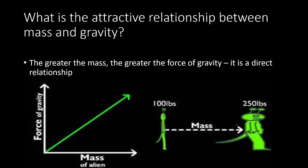Let's take a look at the attractive relationship between mass and gravity on a graph. The greater the mass, the greater the force of gravity — it is a direct relationship. Notice on this graph: as the mass increases, so does the gravitational force. As mass increases, gravitational force increases. As gravitational force increases, mass increases — because they are a direct relationship.